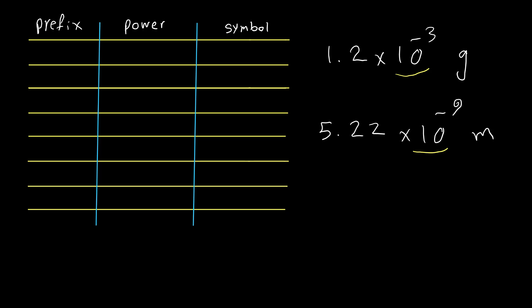I'm going to list some of these prefixes in this table. The power for giga is positive 9 and the symbol is G. Another prefix is mega, the power for mega is positive 6 and the symbol is M. Kilo, positive 3, K. Centi, negative 2, lowercase c. Milli, negative 3, m.